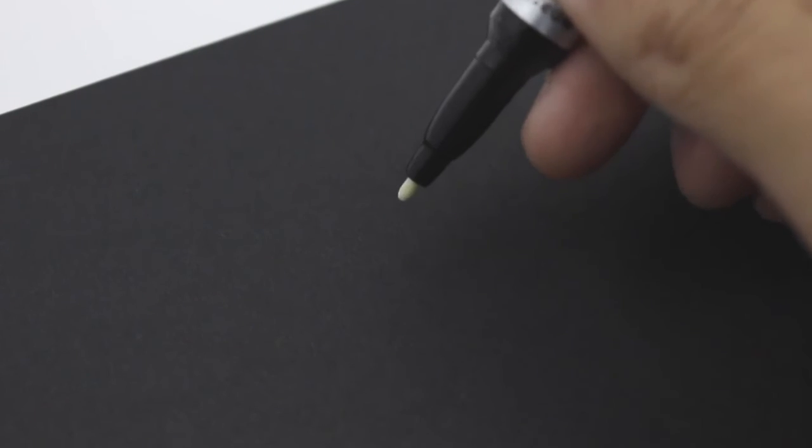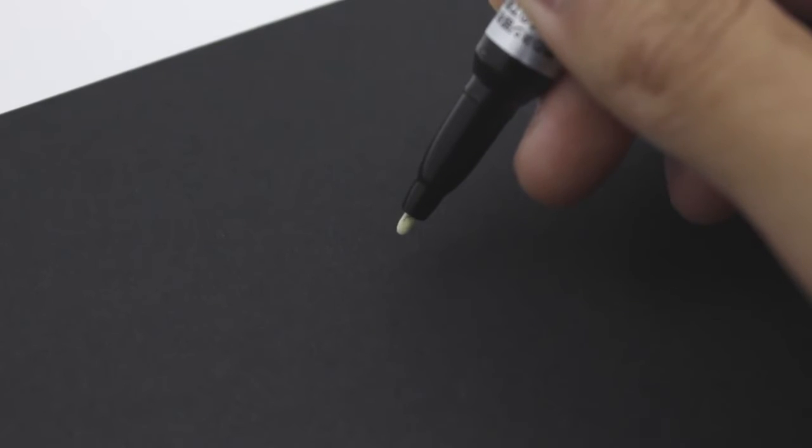Lastly, after releasing the internal pressure, depress the nib downward to write. Sometimes the ink may take up to a minute to flow out, so make sure you don't over pump the marker.